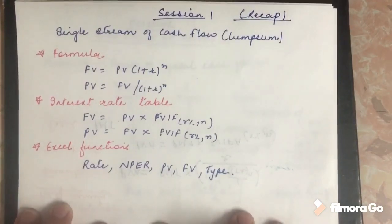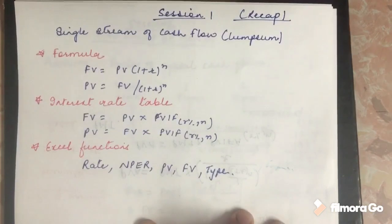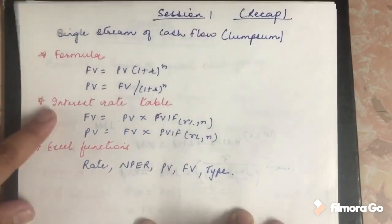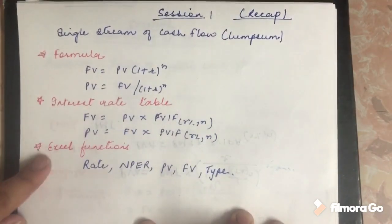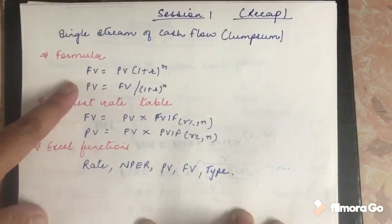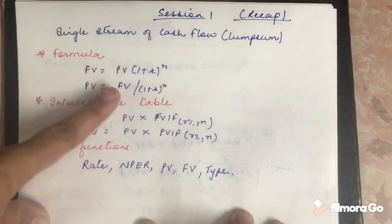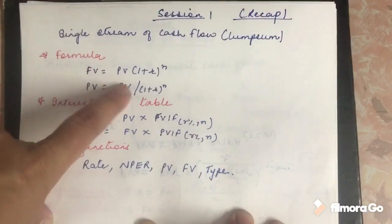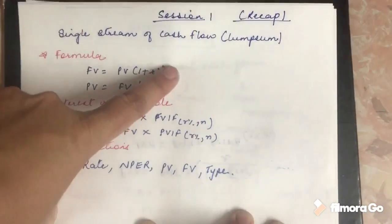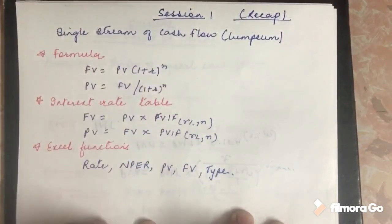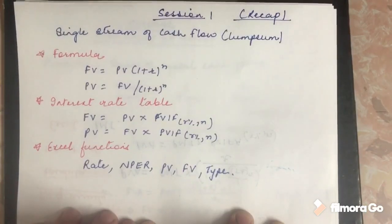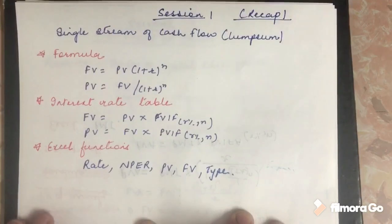We studied three techniques to calculate time value of money: the formula, the interest rate table, and the Excel function. In the formula approach, the formula for converting present value into future value was PV × (1 + r)^n, where r is the interest rate and n is the time period. Similarly, present value is equal to future value divided by (1 + r)^n.